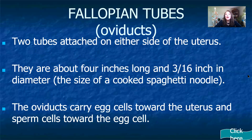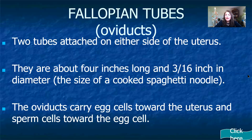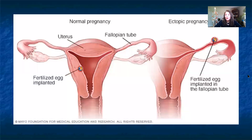The fallopian tubes — also called oviducts — are about the size of a cooked piece of regular spaghetti, so clearly visible to the naked eye. Later in the year when we dissect female cats, we'll be able to see the ovaries. The oviducts sweep the egg released from the ovary into the uterus through a motion called peristalsis — the slow concentric contractions of smooth muscle we learned about in the digestive system unit — moving the egg along toward the uterus.